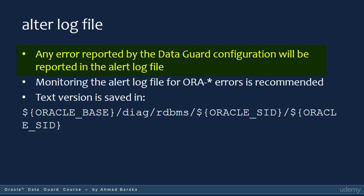If any Data Guard component raises an error, it will be reported in the alert log file. You will need to look into the alert log file in both the primary and standby databases. Most DBAs have scripts set up to monitor the alert log for ORA errors and send email notifications when something wrong is reported. The alert log file exists in both XML and text format; the text version is saved in the directory shown in the slide. In the next slide, I will discuss a view that helps you dig into the alert log and get the Data Guard messages.